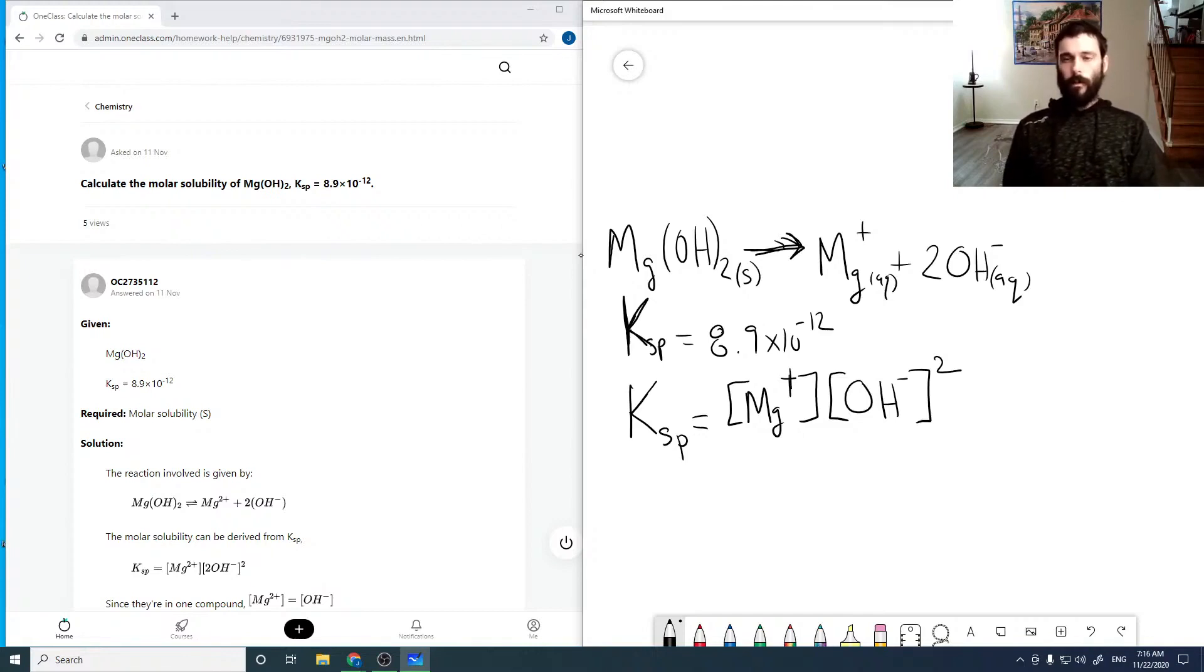Also, looking at the equation, for every one mole of magnesium, we get two moles of OH minus. So that means that in actuality, the concentration of OH minus is always twice that of magnesium.